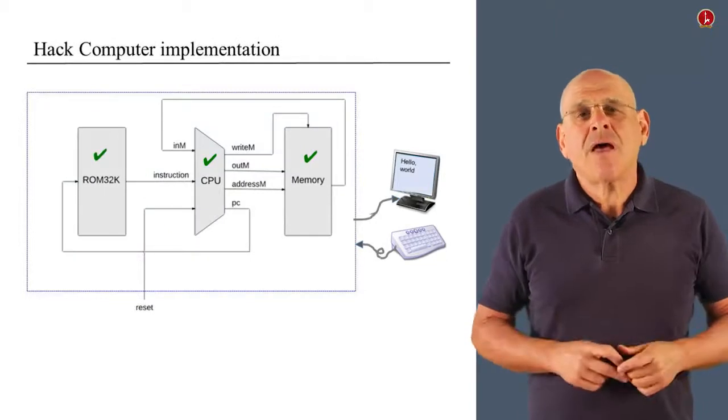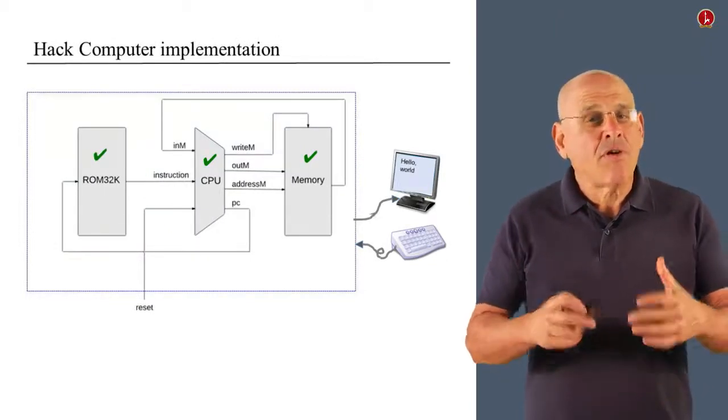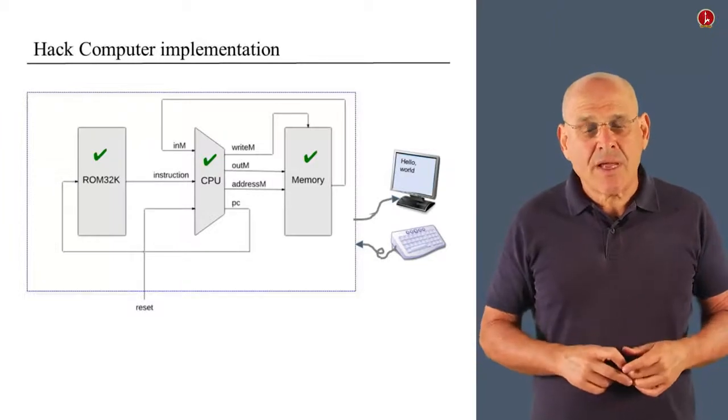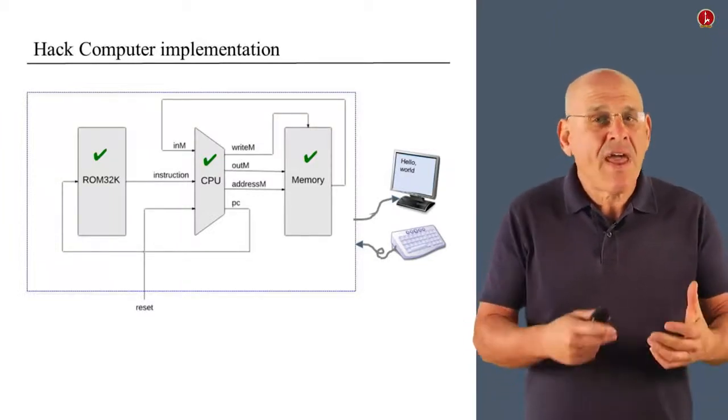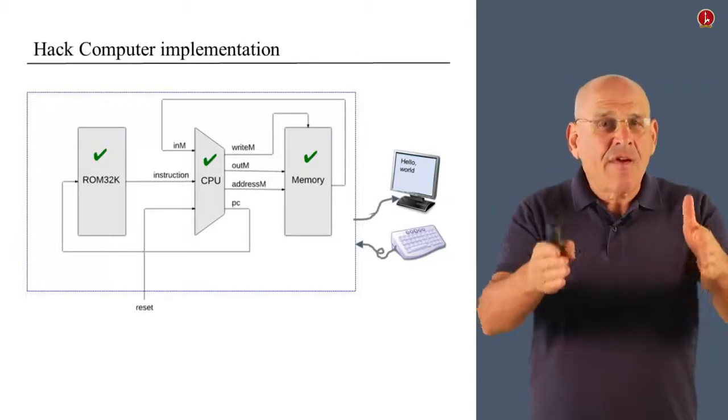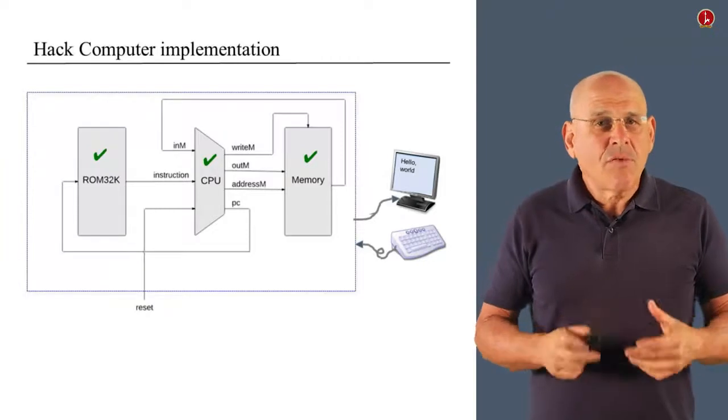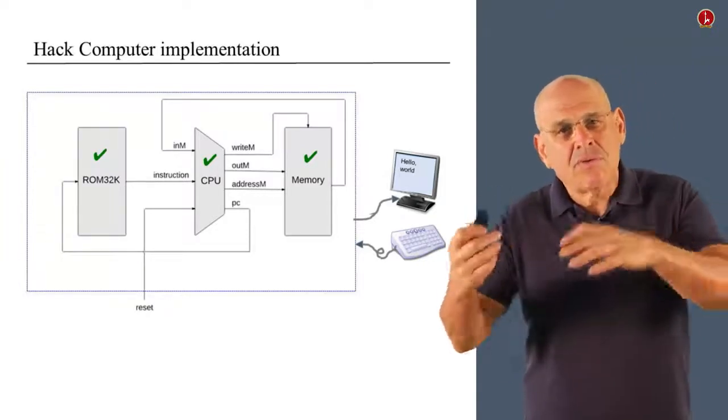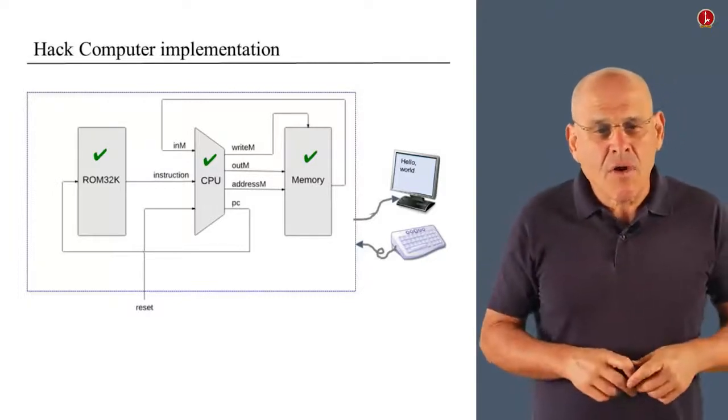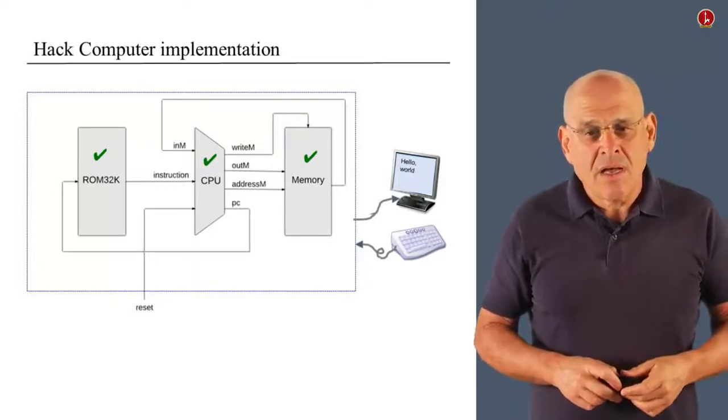So that's it. We built all the three components that make up the architecture. And the only thing that remains is to actually effect in HDL the very diagram that you see here in front of you. So you have to write a few HDL statements that connect the CPU to the memory and to the ROM 32K in the same way that you see here in the diagram.